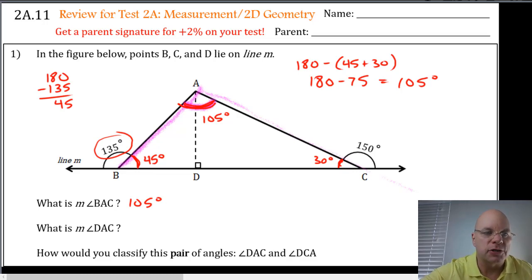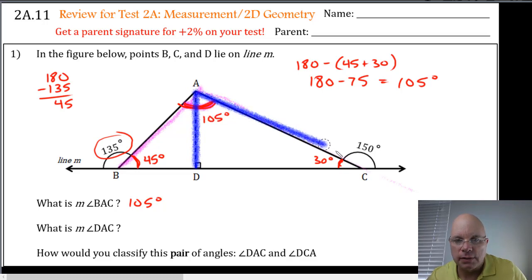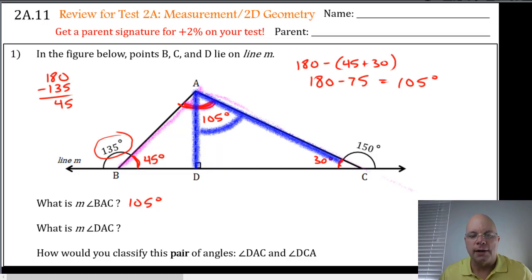The next question asks for the measurement of angle DAC. D to A to C would be this angle. So we're talking about this angle now. And now we're talking about a different triangle, right? So I have this angle is 90 degrees, and this angle is the same, it's still 30 degrees.